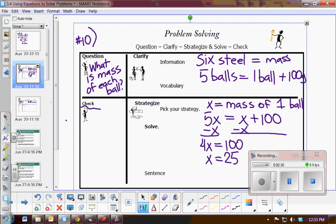Make sure you check. Are your units correct? We must have grams. When I check, does 5 times 25 equal 25 plus 100? Yes, 125 equals 125. I would write my complete sentence saying the mass of one ball is 25 grams.